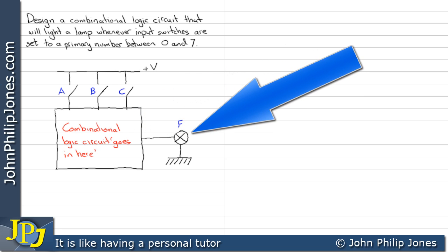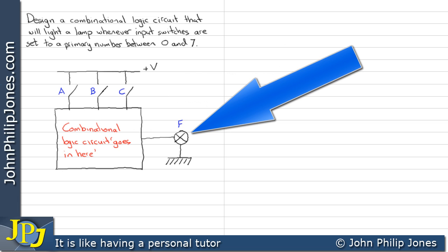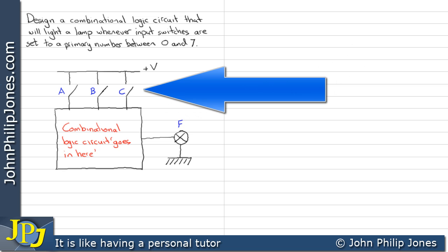And the output F is the lamp which will either be on or off depending on the input combinations we have at A, B and C.